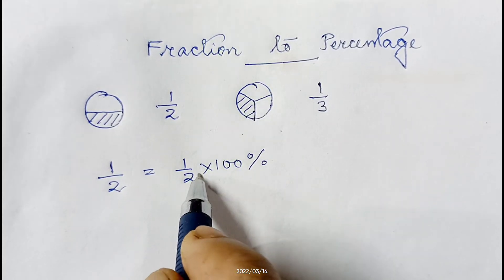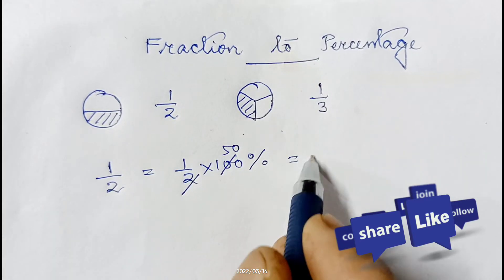Very easily, 10 to 2 can be cancelled, so 2 50 to 100, so it will give 50 percent.